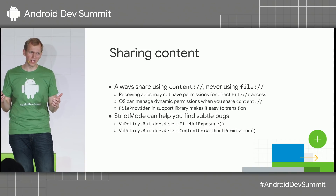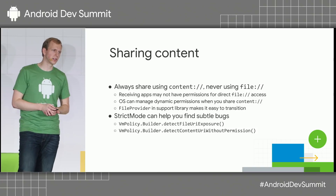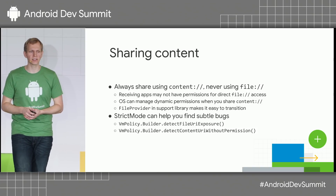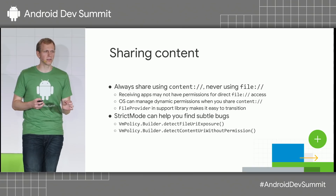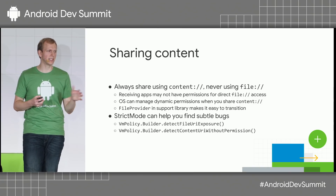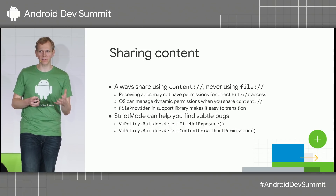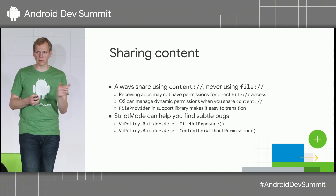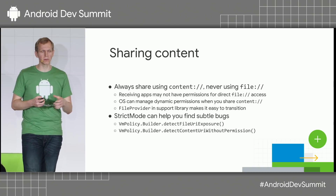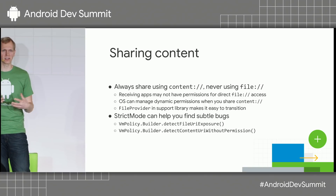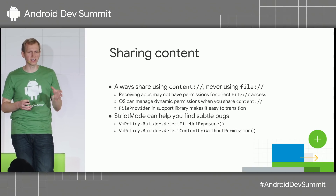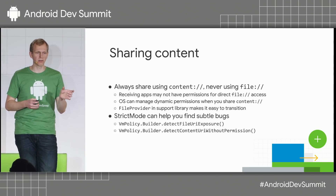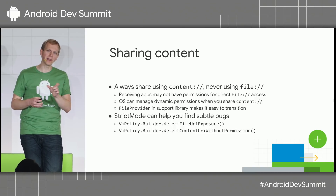When sharing content, always use content URIs, never file URIs. The receiving application may not have the permissions needed to directly access files on disk. With content URIs, the OS manages dynamic permissions so the receiving app can open the content. FileProvider in the support library is a great way to convert between file and content URIs with a single line of code. We also have StrictMode APIs to detect places where you might be accidentally sharing file URIs, or sharing a content URI while forgetting the FLAG_GRANT_READ or FLAG_GRANT_WRITE flags.